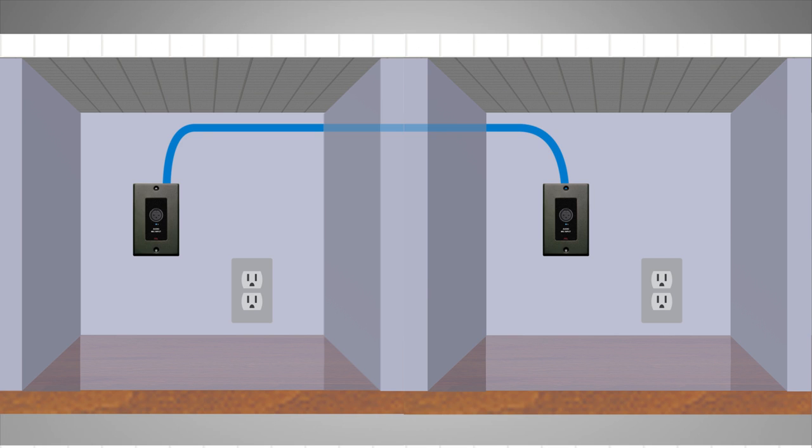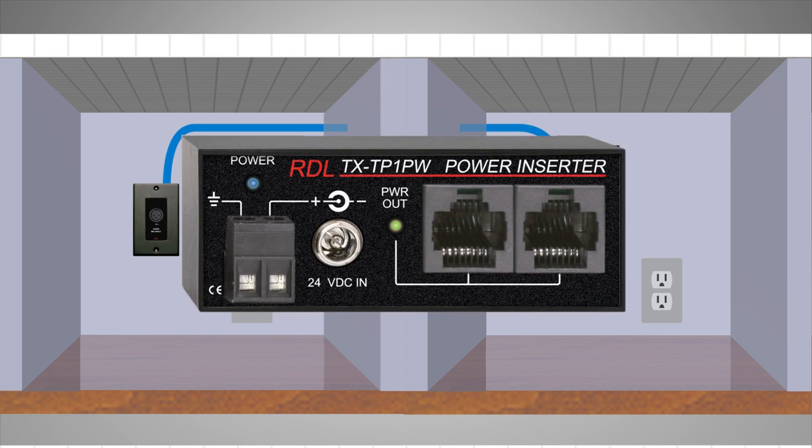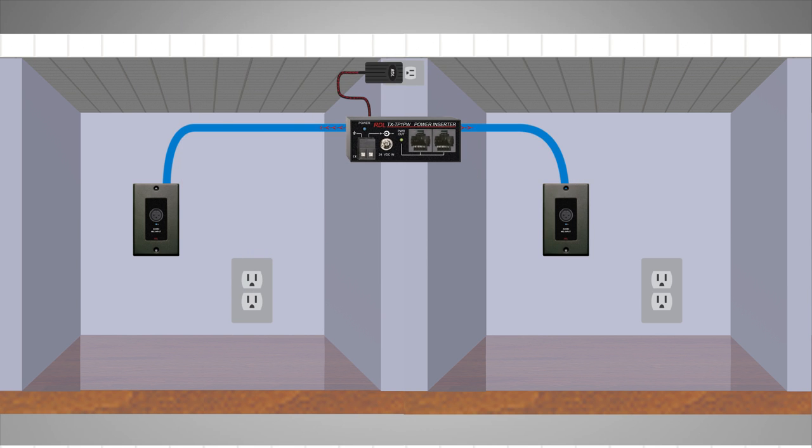Senders and receivers are frequently mounted in walls where local power is impractical. Those senders or receivers can be powered through the twisted pair cable. DC power may be connected at one end to power the modules at both ends. Often, it is more convenient to connect power somewhere in the middle of the cable run using Format-A power inserters.